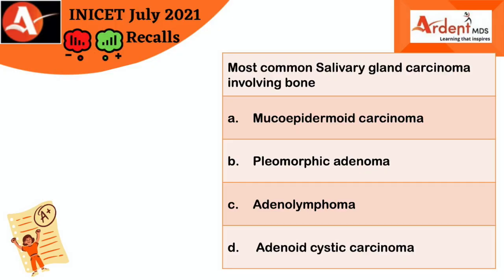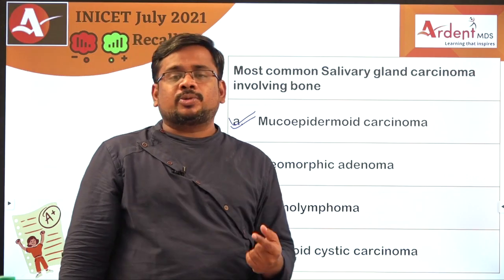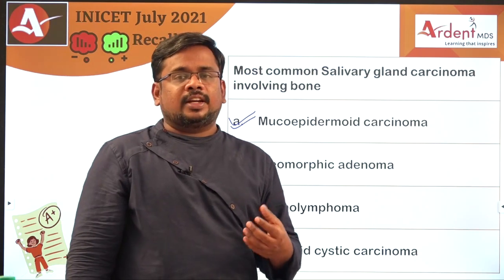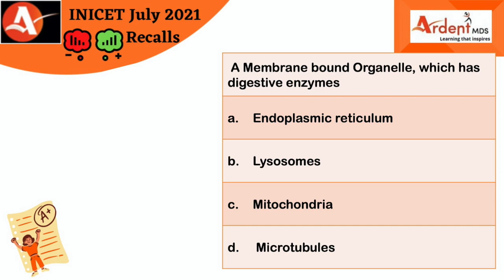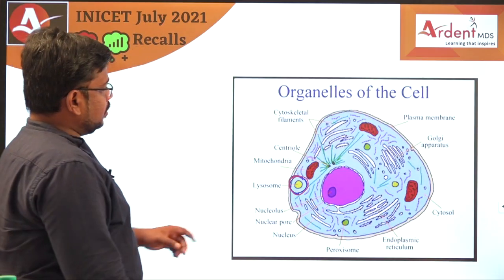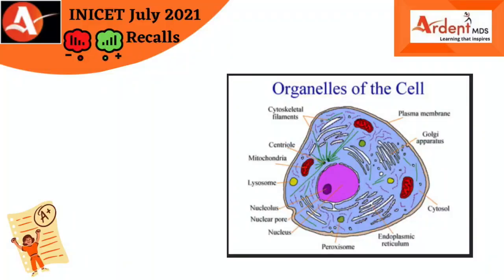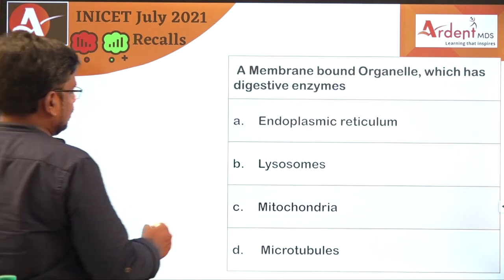One more direct question: which is the most common salivary gland carcinoma involving bone? The answer is mucoepidermoid carcinoma. If they ask which is the most common tumor of the salivary gland, then the answer is pleomorphic adenoma. There is also a question: which is the membrane-bound organelle that has digestive enzymes? The answer is lysosomes — lysosomes contain digestive enzymes that help in degradation and recycling of cellular waste products.